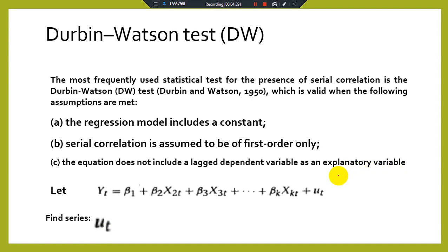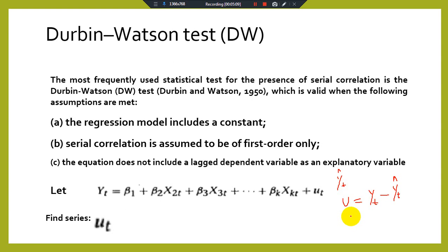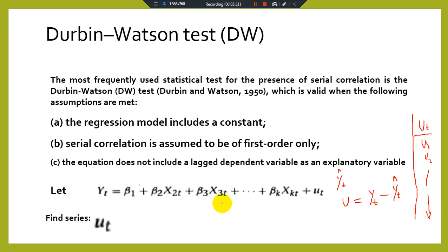We know that the error U_T equals Y_T minus Ŷ_T. Using this, we find a series of U_T values: U₁, U₂, and so on. This is the U_T series. You need to find this series because the DW test focuses on the error term.